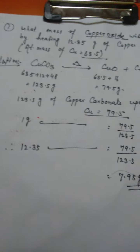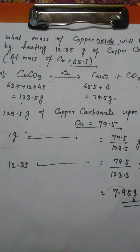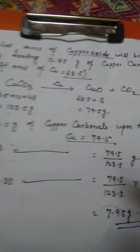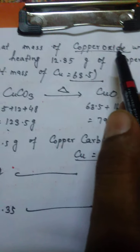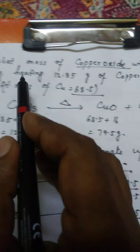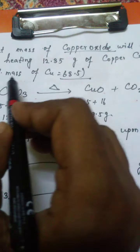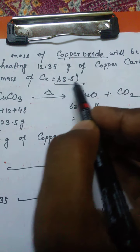Hello students, we have a question related to stoichiometry. What mass of copper oxide will be obtained by heating 12.35 grams of copper carbonate? The atomic mass of copper is given as 63.5.